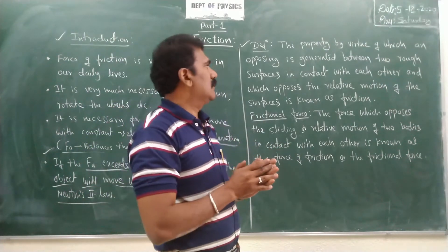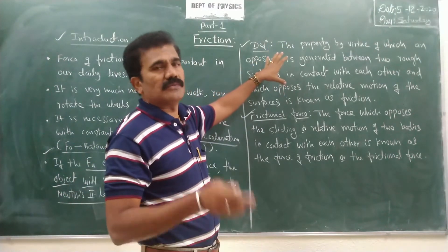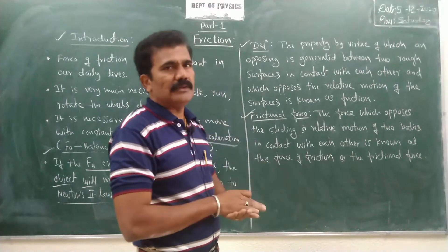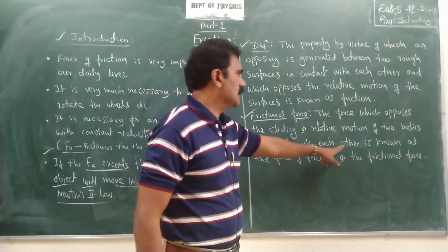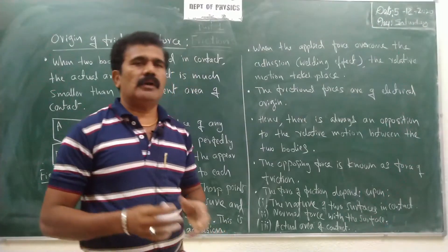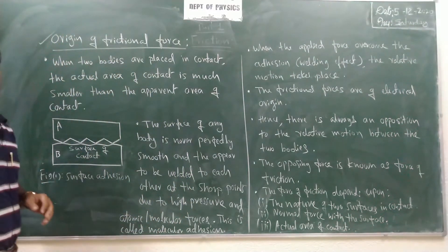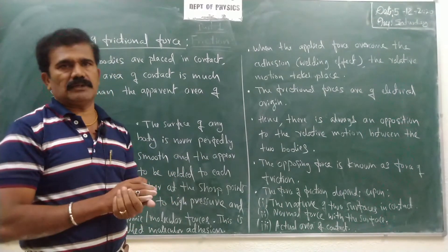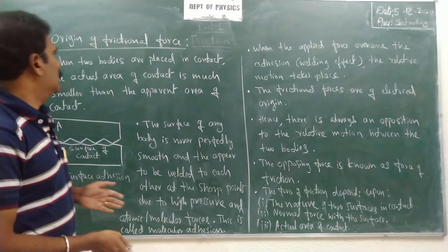There should be relative motion between two bodies to experience the property called friction. The force which opposes the sliding — where one body slides over the other, undergoing relative motion — is known as the force of friction. Now the question is how this frictional force arises. We need to understand the origin of frictional force at the point of contact between the two bodies.